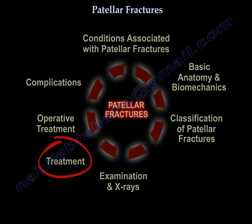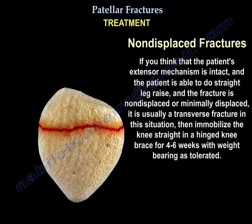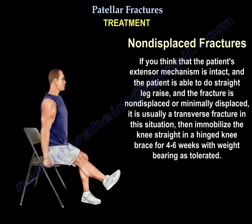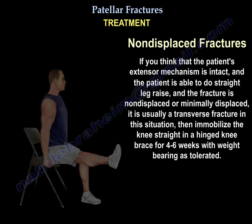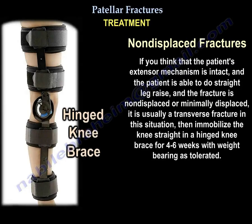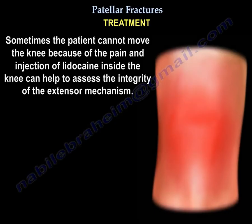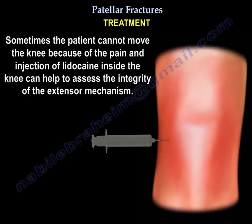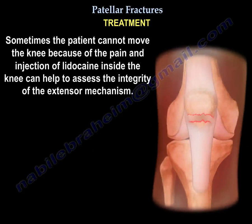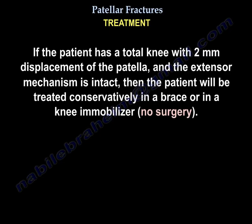Treatment — non-displaced fracture: if the patient's extensor mechanism is intact, the patient is able to do straight leg raise, and the fracture is non-displaced or minimally displaced — usually a transverse fracture — then immobilize the knee straight in a hinged knee brace for four to six weeks with weight-bearing as tolerated. Sometimes the patient cannot move the knee because of pain, and injection of lidocaine inside the knee can help assess the integrity of the extensor mechanism. If the patient has a tense knee with two millimeters of displacement and the extensor mechanism is intact, the patient will be treated conservatively in a brace or immobilizer — no surgery.